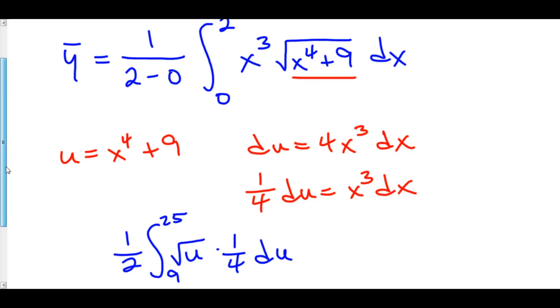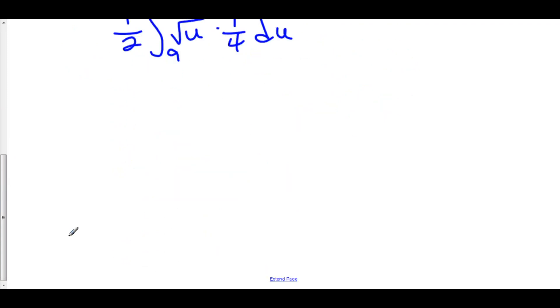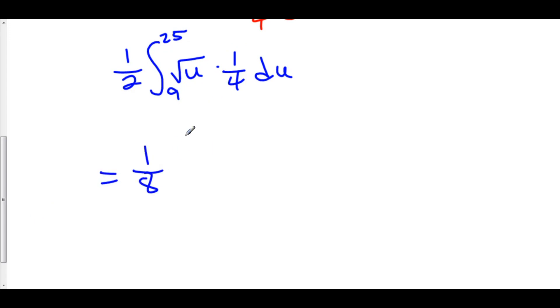Now I have an entirely new integral, which is exactly the same as what we had before, just using u instead of x. I can pull out the 1 fourth using constant rule. 1 half times 1 fourth is 1 eighth. And I've got the integral from 9 to 25. I'm going to rewrite the square root of u as an exponent. That's u to the 1 half du.